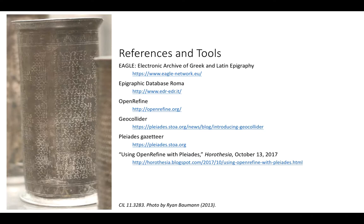We'll get our text from the Electronic Archive of Greek and Latin Epigraphy, and specifically from the Epigraphic Database Roma, which provides information about Roman inscriptions from ancient Italy. We'll make use of two software tools — OpenRefine and Geocollider — which will allow us to take the data we've created and collate or align it with the Pleiades Gazetteer, an online resource for information about ancient places and place names.